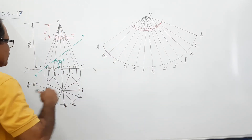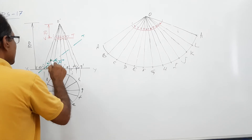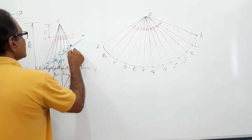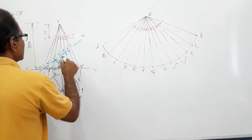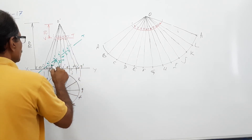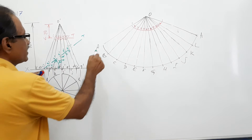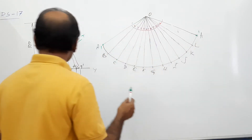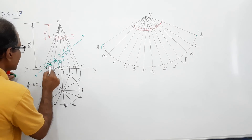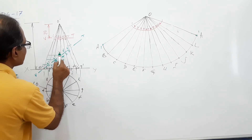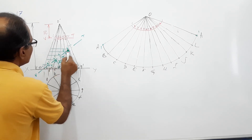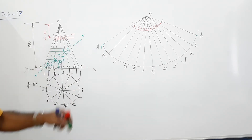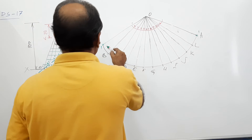What difference does this bring? Mark points 1 dash through 12 dash. 1 dash is here itself. Draw horizontal lines and go to the true length of the generator, for all points except 7 dash and 1 dash. Take those distances and mark on the respective generator.